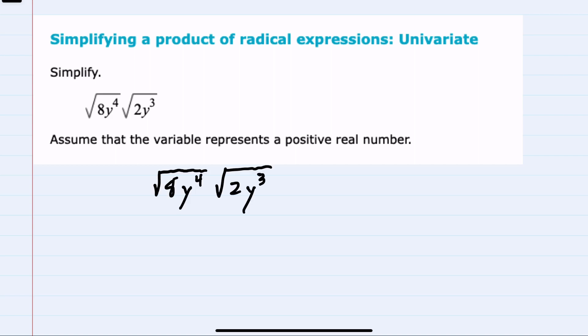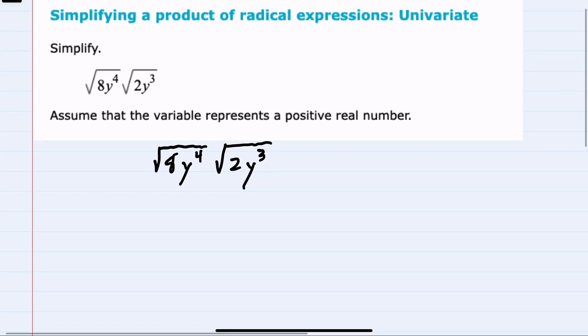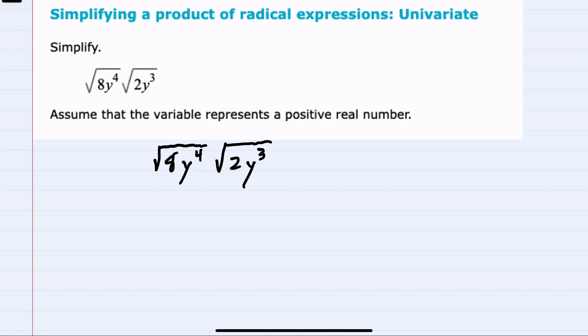And we can see that in this example, we have two square roots that are being multiplied. And one of the properties of radicals that we know is that when we have two of the same radicals being multiplied...